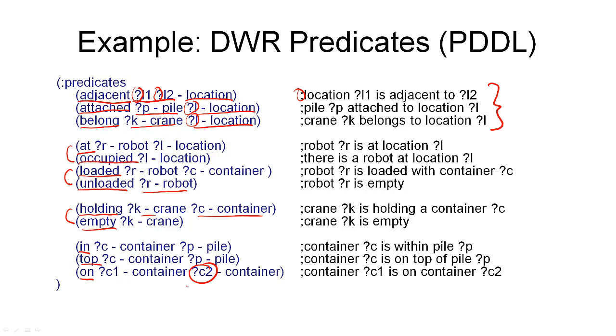The second container here can also be the pallet, which is technically defined as a property type of container. So, these are the predicates used in the dock worker robot domain, defined in the PDDL syntax.